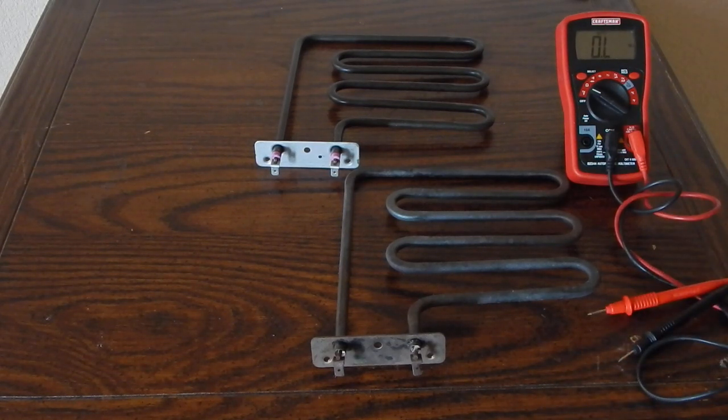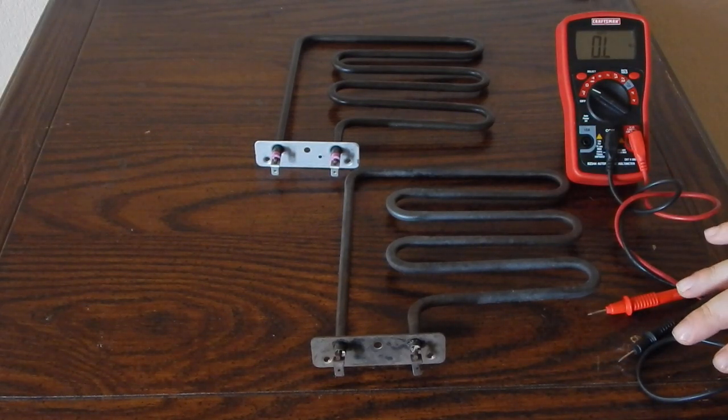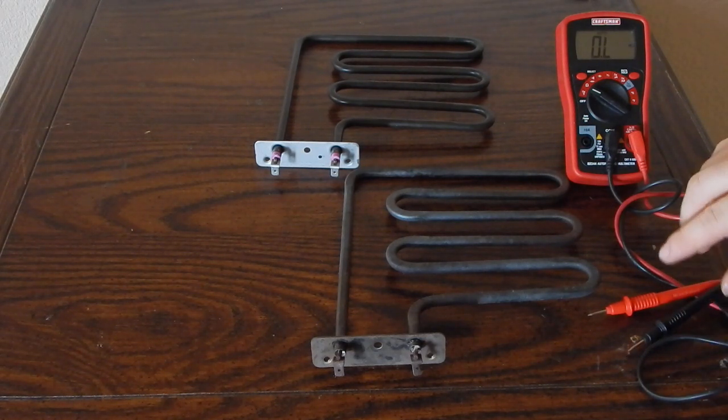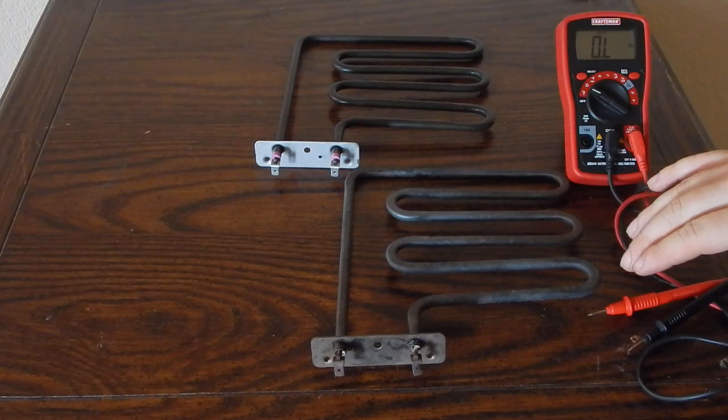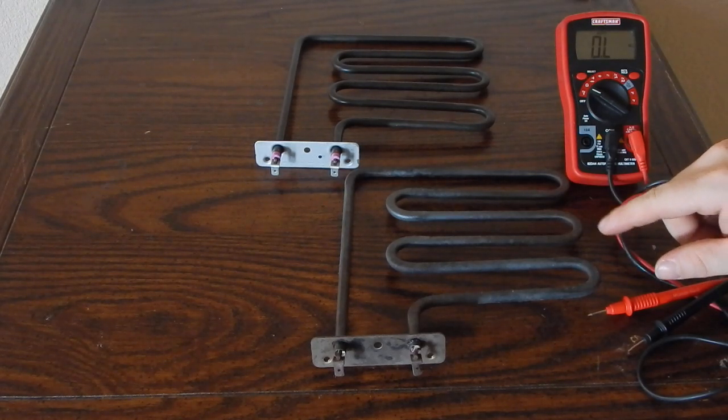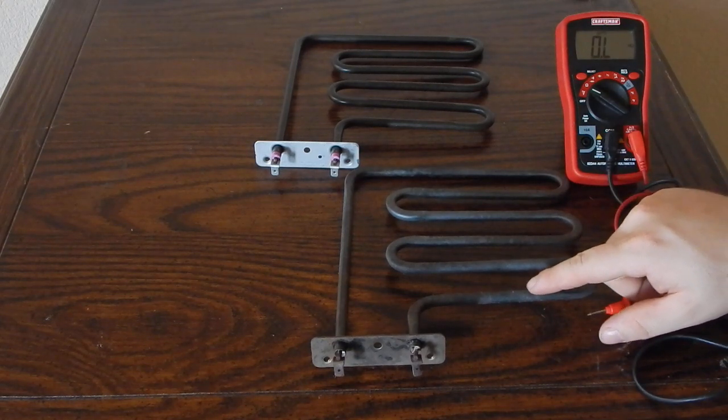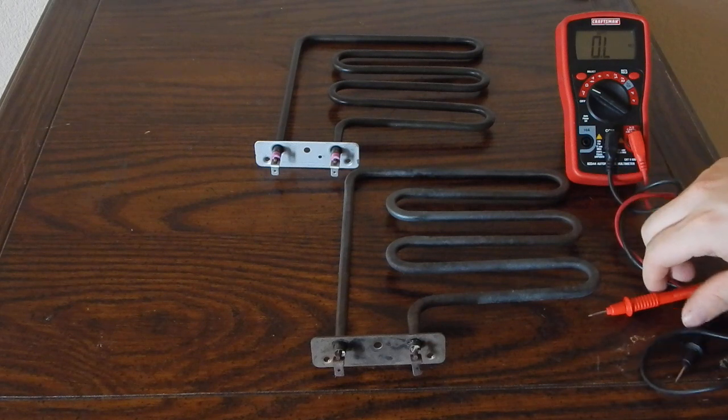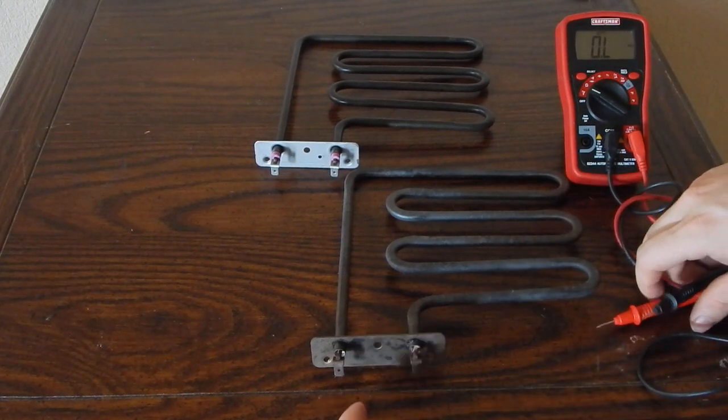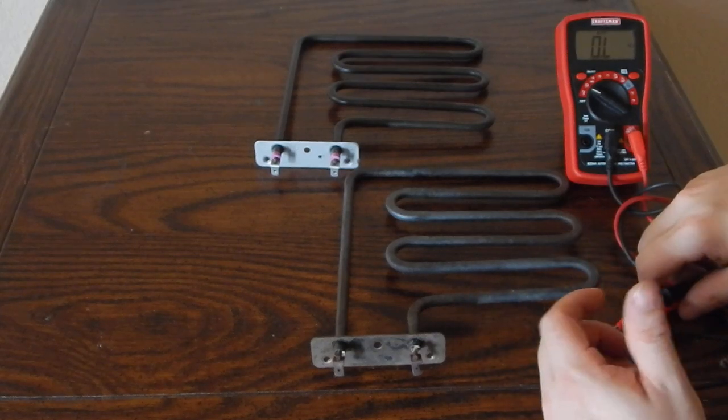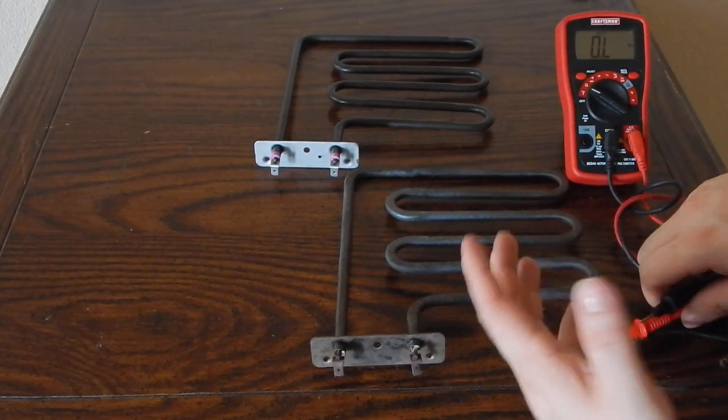So the heater element is made up of basically three parts: you've got the internal wire which is usually nichrome, then a ceramic or electrically insulating material, and then usually some sort of stainless steel or similar covering on the outside. What happens is electricity flows through that nichrome wire and it acts like a big resistor, heats the whole thing up kind of like a light bulb and creates the heat.